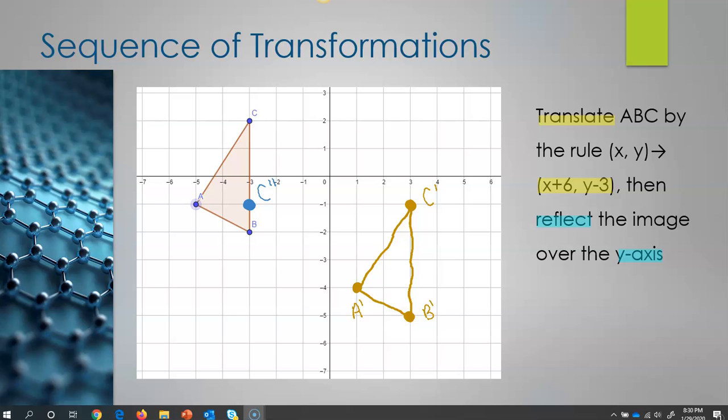Now I do the same thing again. I'm going to use A this time. So A is only one point away from the Y axis. And so one point past it is going to be my A double prime, and double prime because it's the second of the transformations.